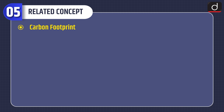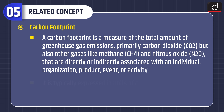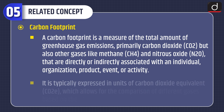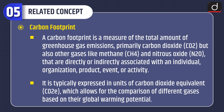Now let us have a look at some related concepts. First, carbon footprint: a carbon footprint is a measure of the total amount of greenhouse gas emissions — primarily carbon dioxide, but also other gases like methane and nitrous oxide — that are directly or indirectly associated with an individual, organization, product, event, or activity. It is typically expressed in units of carbon dioxide equivalent, which allows for the comparison of different gases based on their global warming potential.